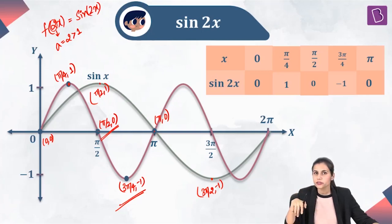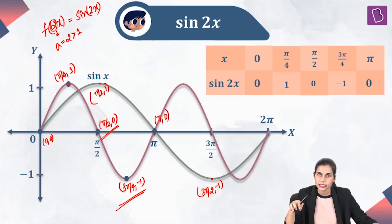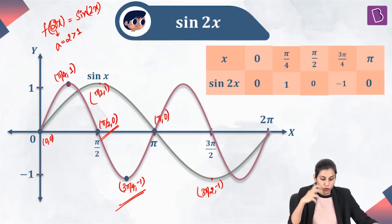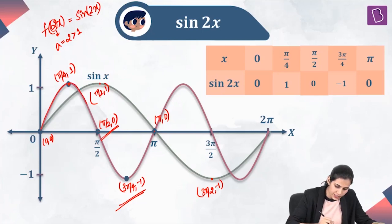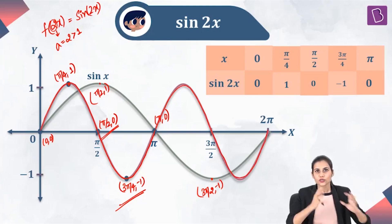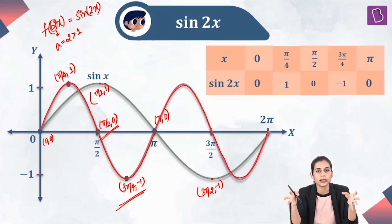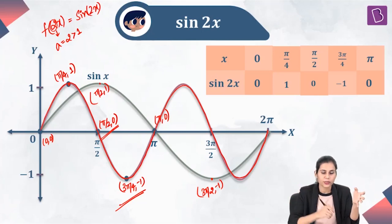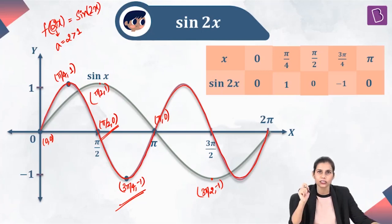The green graph, sin x, completes one cycle in the interval 0 to 2π, whereas the pink graph, sin(2x), completes one cycle in 0 to π only — meaning it completes two entire cycles in 0 to 2π. This simply means that if you take the graph of sin x and shrink it horizontally two times, you get the graph of sin(2x). That's the observation.